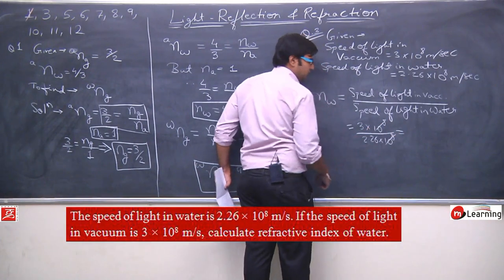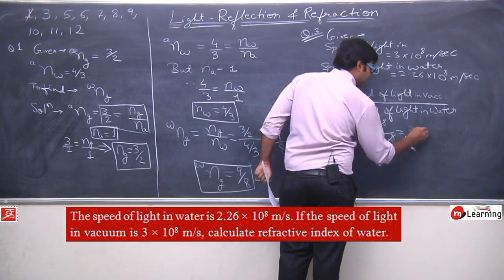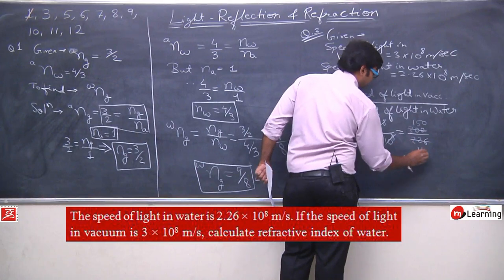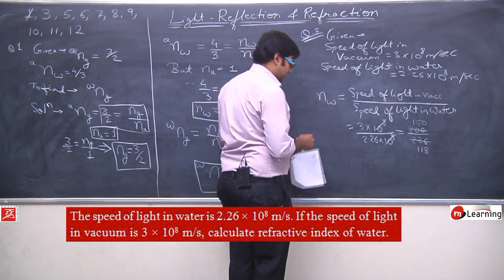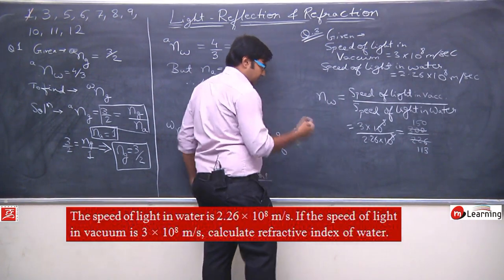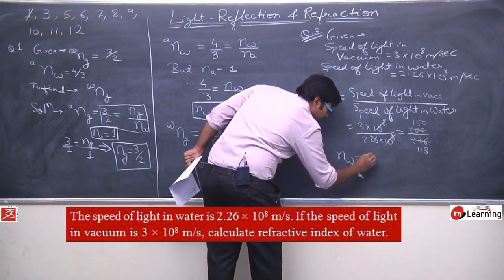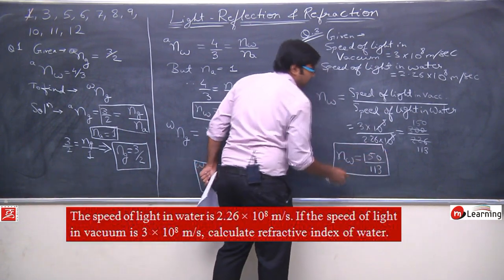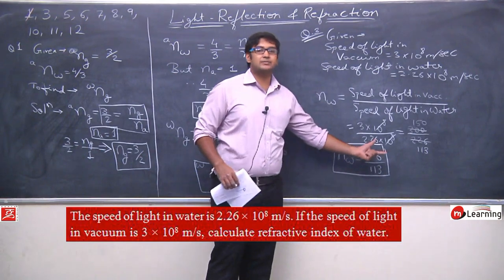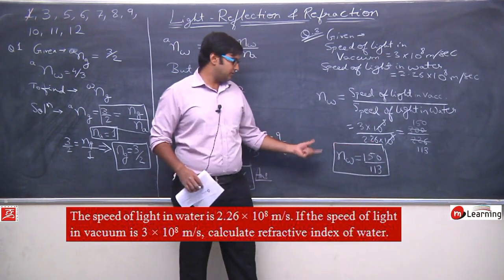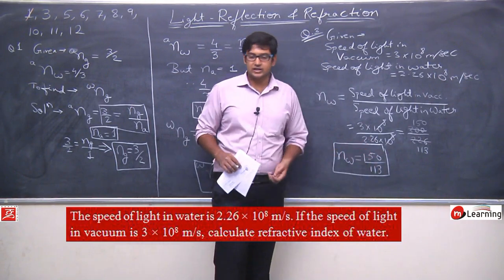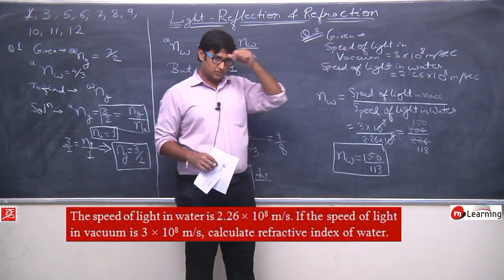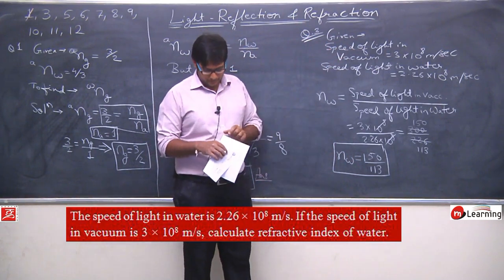The 10⁸ cancels out, giving 300/226, which simplifies to 150/113. Dividing this gives approximately 1.33. So the final answer is that the refractive index of water with respect to vacuum is approximately 1.33.